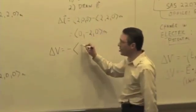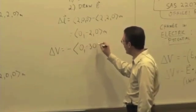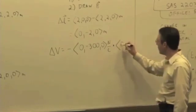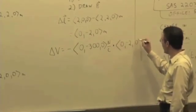We have an electric field that is 0, negative 300, 0, dotted with 0, negative 2, 0 meters.